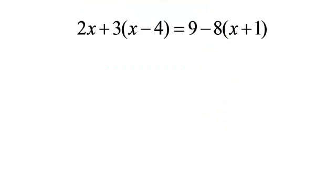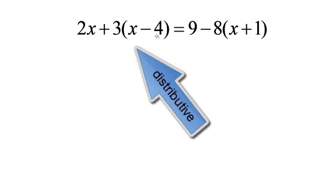Okay, let's work on this equation. I have 2x plus 3 times x minus 4 equals 9 minus 8 times x plus 1. Stop a minute. Look to see what we have. I do see 2x. I see 3 times a parenthesis.